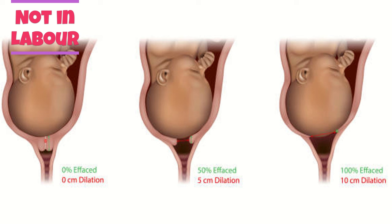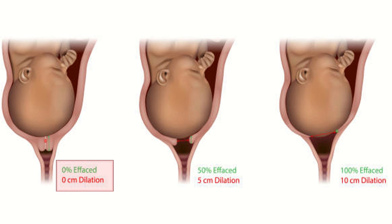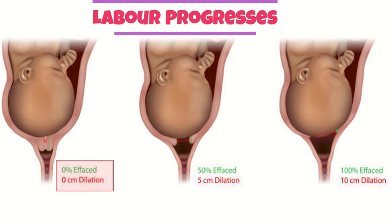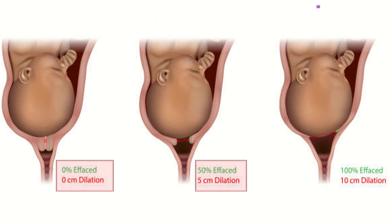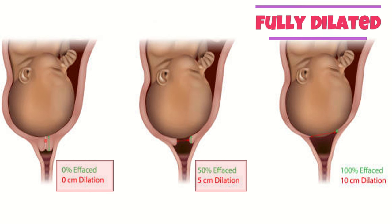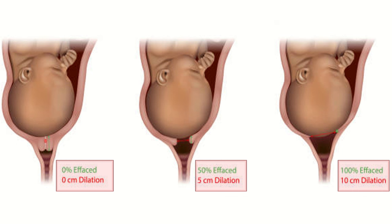When a patient is not in labor, cervical dilatation is zero and can hardly permit the tip of a finger. As labor progresses, the cervix goes from feeling tight to feeling like an elastic band at five centimeters. At full dilatation of 10 centimeters, the cervix is quite thinned out, meaning effacement is 100 percent.